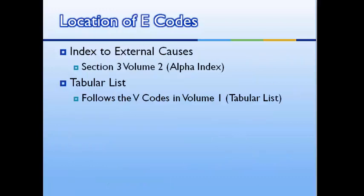In your ICD-9 codebook, there is a separate index to external causes, which follows the end of your bigger alphabetical index. If you want to look up the codes, the E-codes follow the V-codes in the tabular listings.